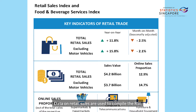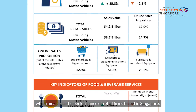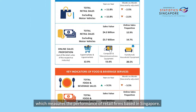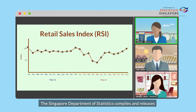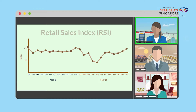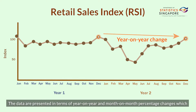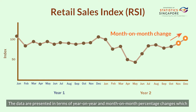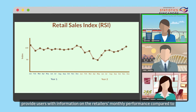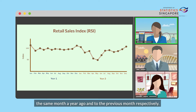Data on retail sales are used to compile the RSI, which measures the performance of retail firms based in Singapore. The Singapore Department of Statistics compiles and releases the RSI on a monthly basis. The data are presented in terms of year-on-year and month-on-month percentage changes, providing users with information on the retailer's monthly performance.